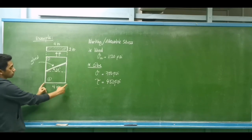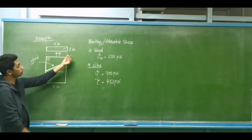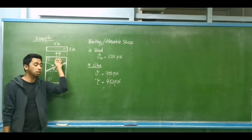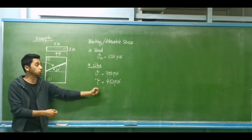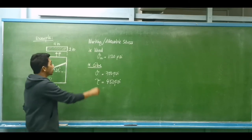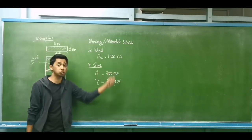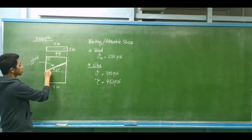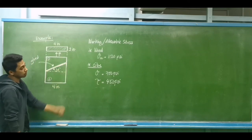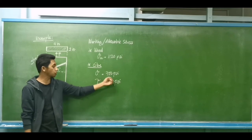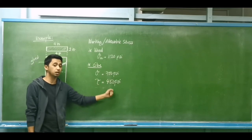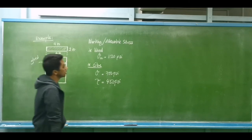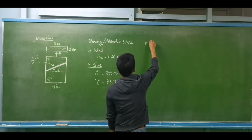The dimension of this wood panel is four inches wide and one inch thick. We are to design for the same value of P using working stresses. For the wood, the allowable stress is 1120 pounds per square inch, while the glue has a normal stress of 700 psi and a shearing stress of 450 psi.